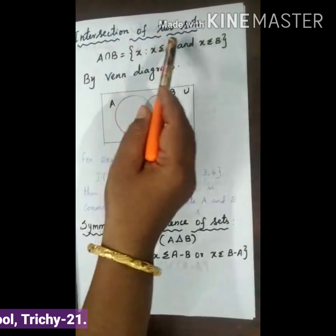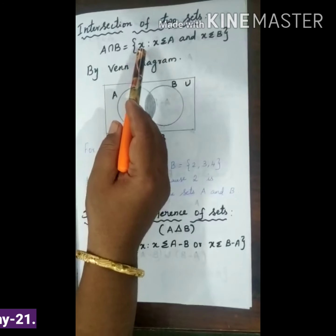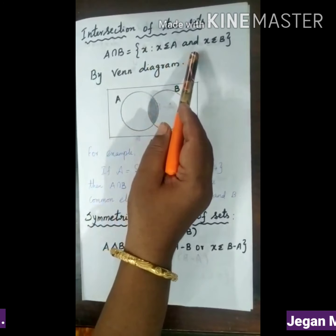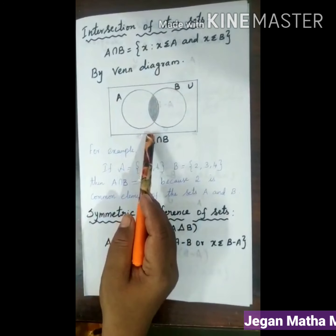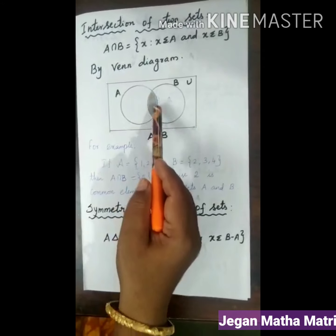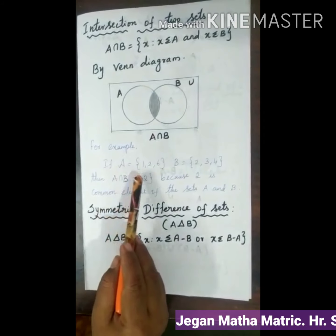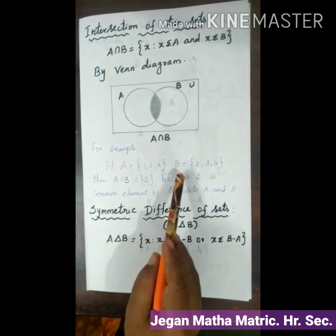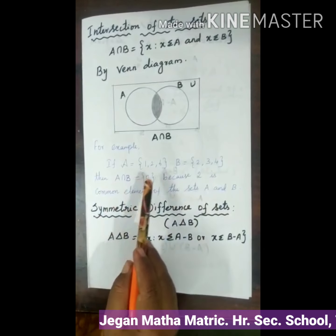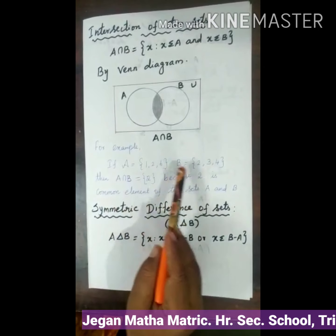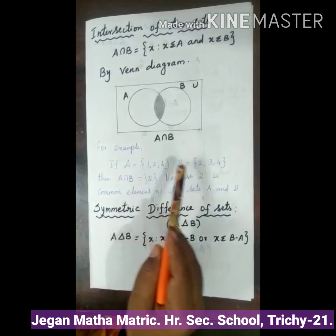Next, let us see intersection of two sets. A intersection B is equal to the set of X such that X belongs to A and X belongs to B. By Venn Diagram, you represent it like this — the A intersection part is the shaded region. For example, if A is equal to {1, 2, 6} and B is equal to {2, 3, 4}, then A intersection B is {2}, because 2 is the common element of sets A and B.